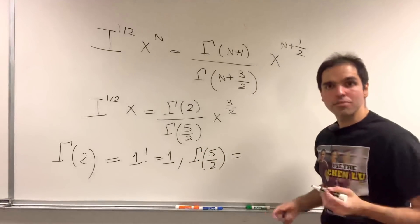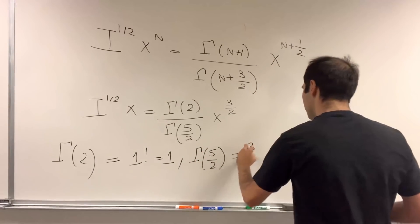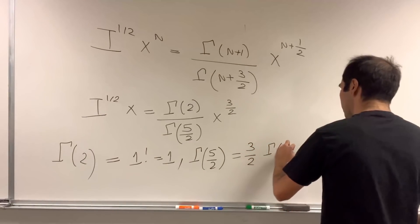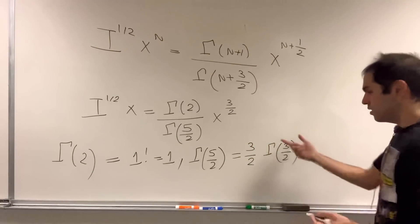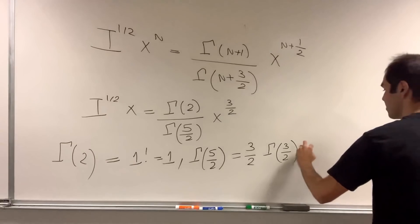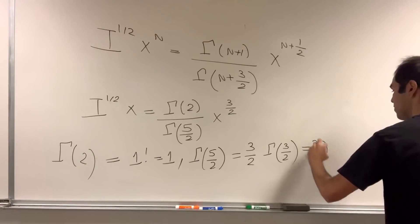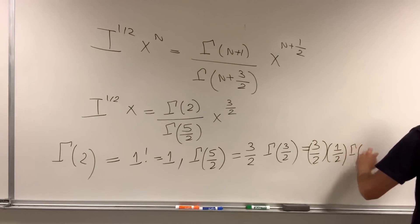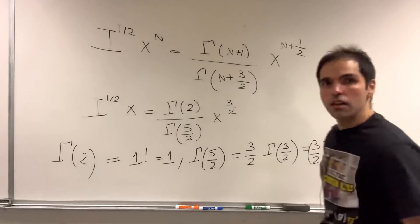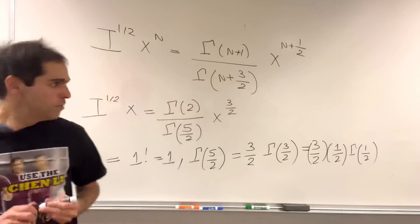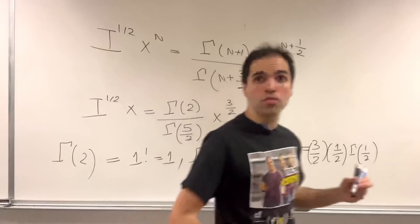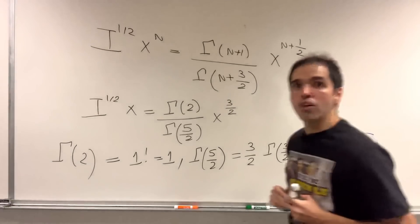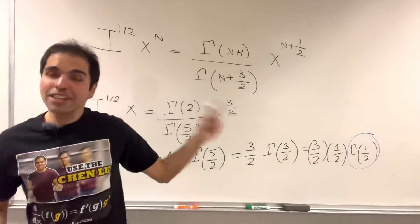And now the bottom, well, gamma of 5 halves. Remember, gamma has this multiplicative property. So, it's 3 halves times gamma of 3 halves. And you can even do better, that's 3 halves times 1 half, gamma of 1 half. And so, really, we get 3 quarters, and the only thing to evaluate is this gamma of 1 half.